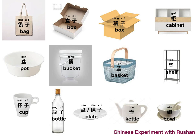The next three: 盆, a pot or basin. 桶, a bucket. And 篮, a basket. They are in general bigger containers. 盆 and 桶 are usually rounded, but 盆 is more shallow and 桶 is deeper. 篮 is mostly made up like a woven basket.